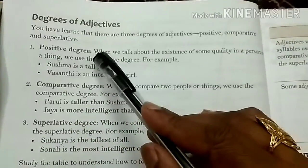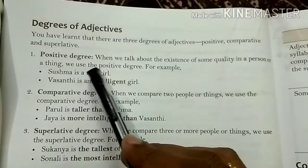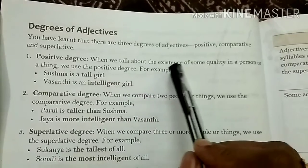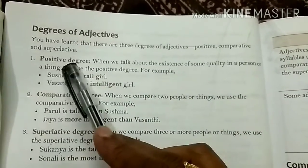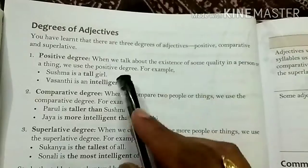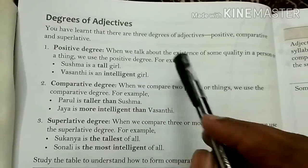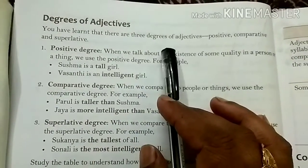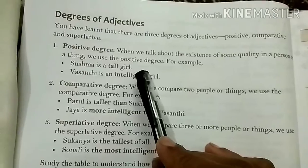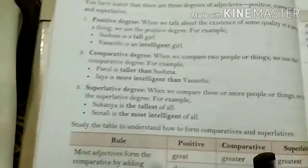Positive degree: when we talk about the existence of some quality in a person or a thing, we use the positive degree. There is no comparison — just stating a quality. For example, 'Shushma is a tall girl,' 'Vashranti is an intelligent girl.'